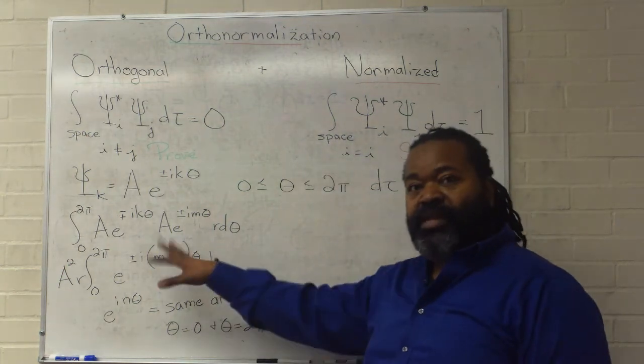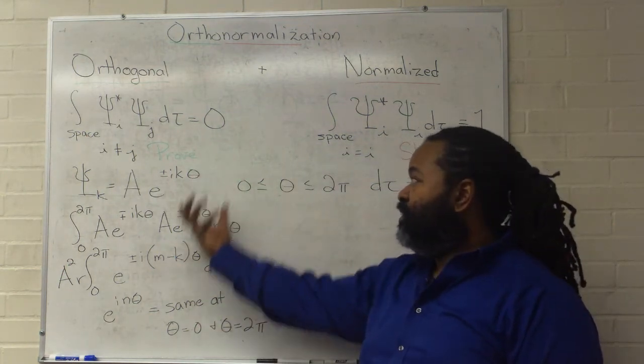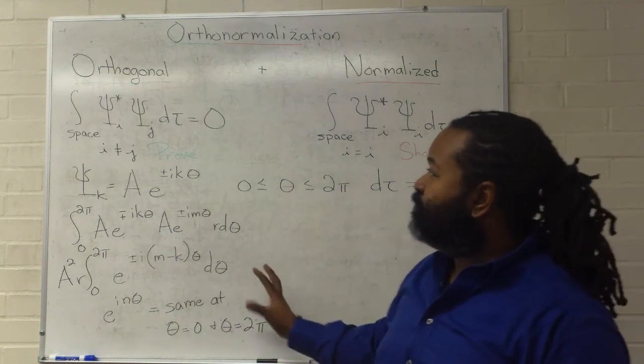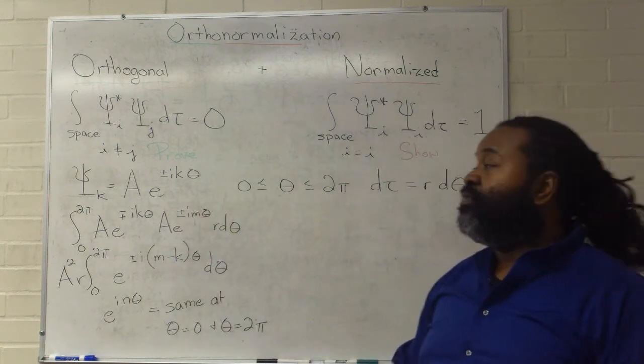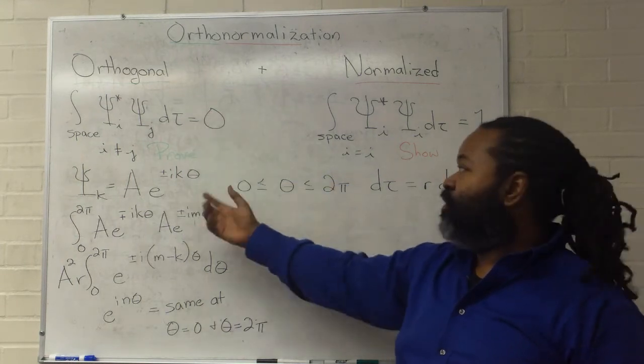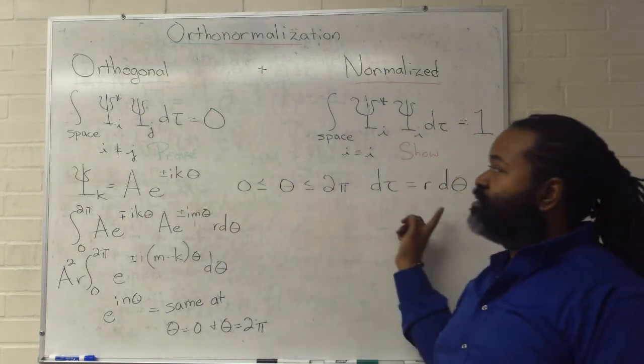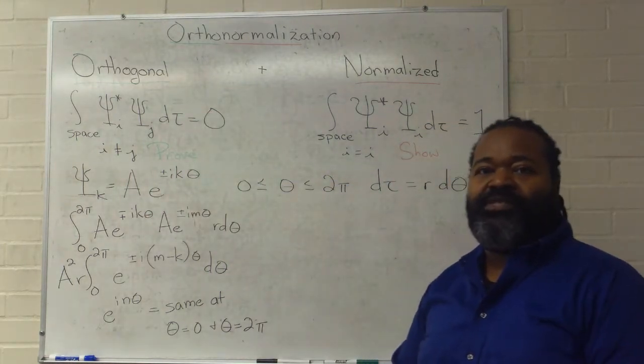So, once we take the integral and apply the fundamental theorem of calculus, this entire thing is equal to 0. So, that suffices as a proof that when we execute this integral and solve it for the specifics of the system, the whole thing becomes 0.